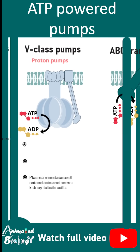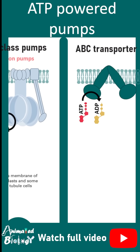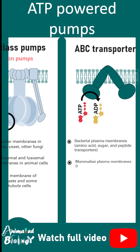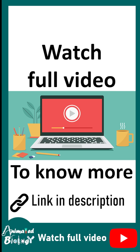Then there are ABC transporters, which hydrolyze ATP and ultimately allow the transport of molecules across the membrane. They are important for multi-drug resistance.